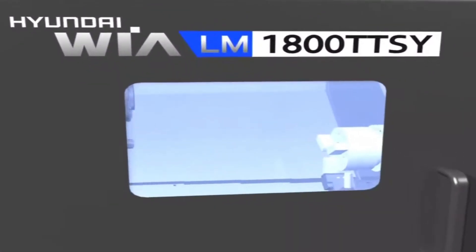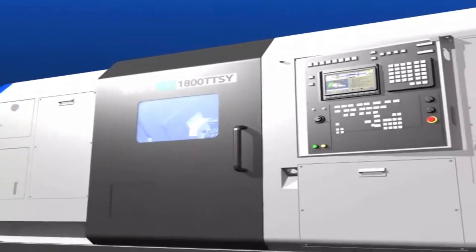Bulletproof window is applied on machine's door to prepare for any safety accident and Hyundai WIA's inherent color is applied to establish machine's identity.